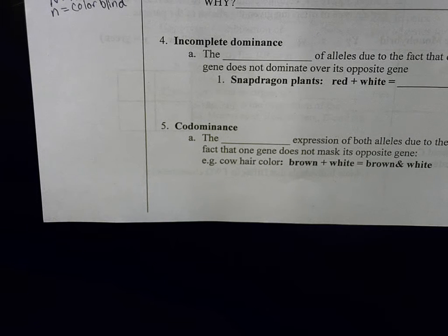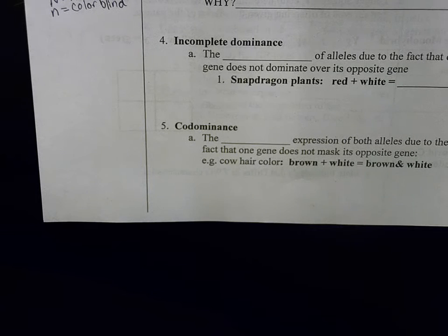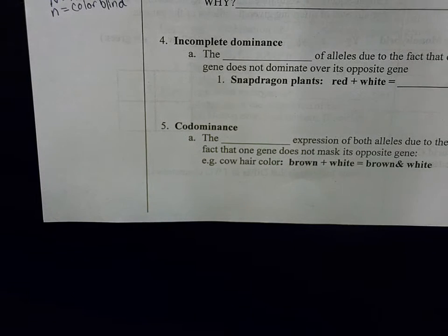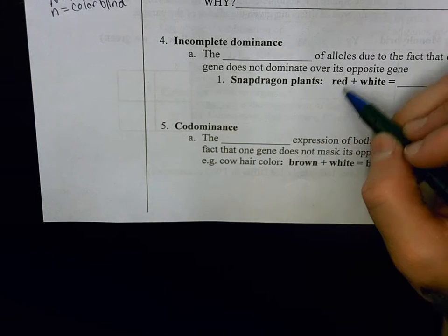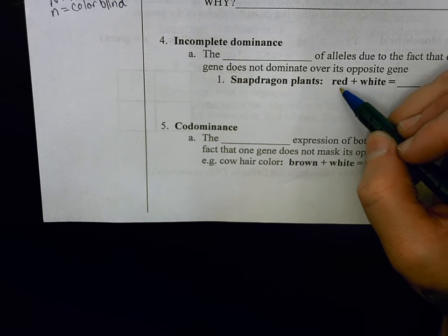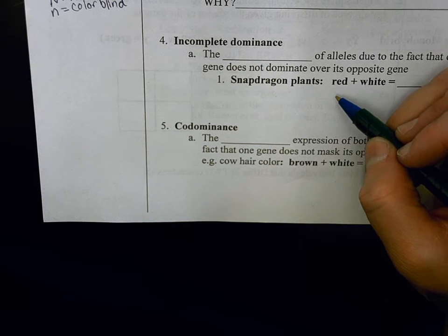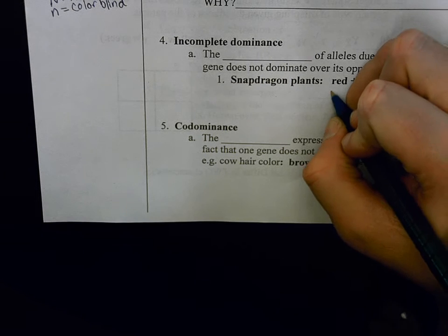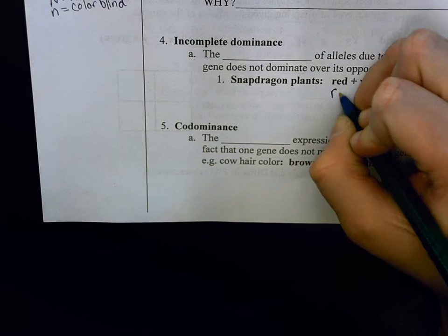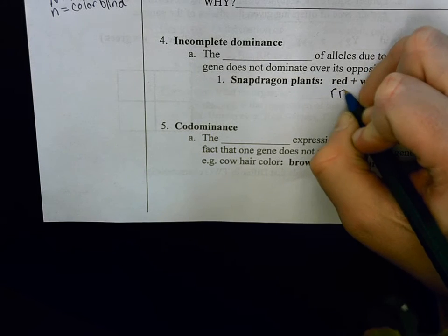Because of this, you can think of them as two recessive alleles — they will instead blend to create a new phenotype. For instance, in snapdragon plants, there are red flowers, but red is not a dominant allele, so we would represent it as lowercase r and lowercase r.